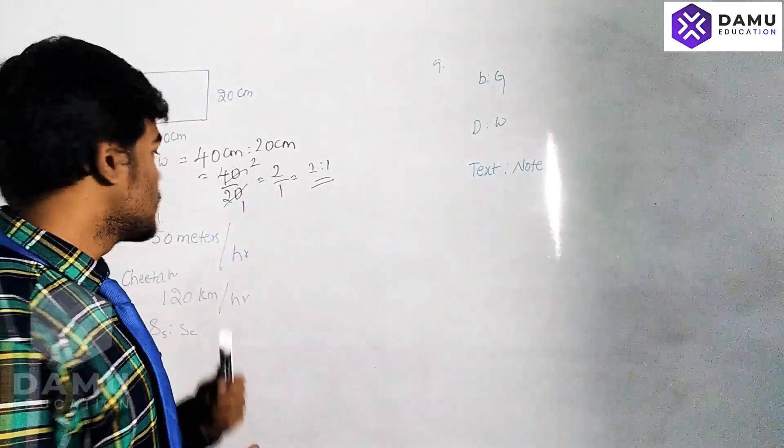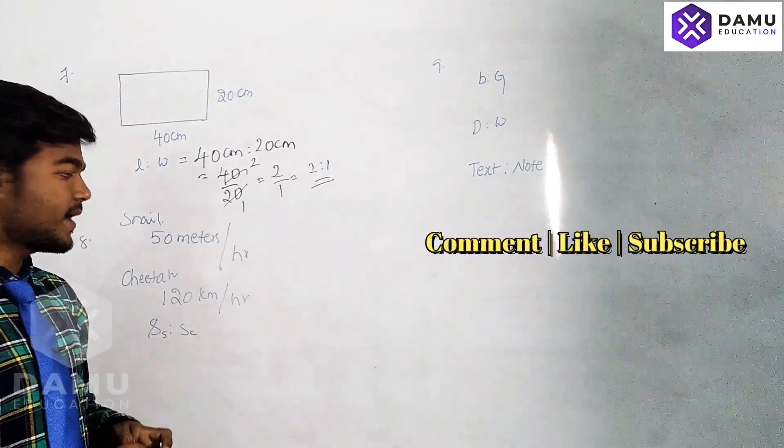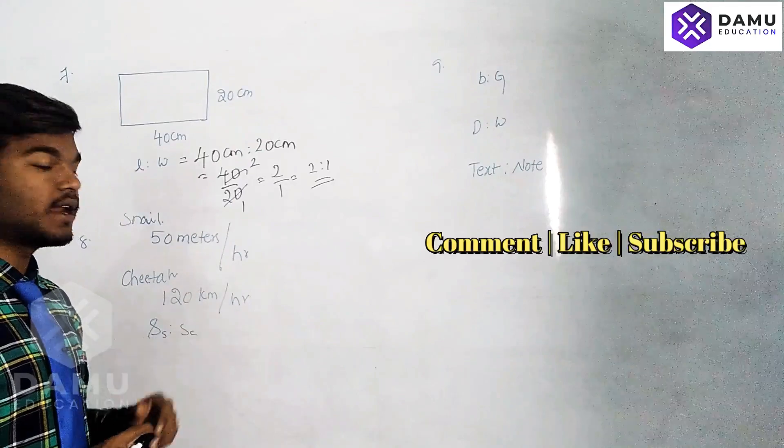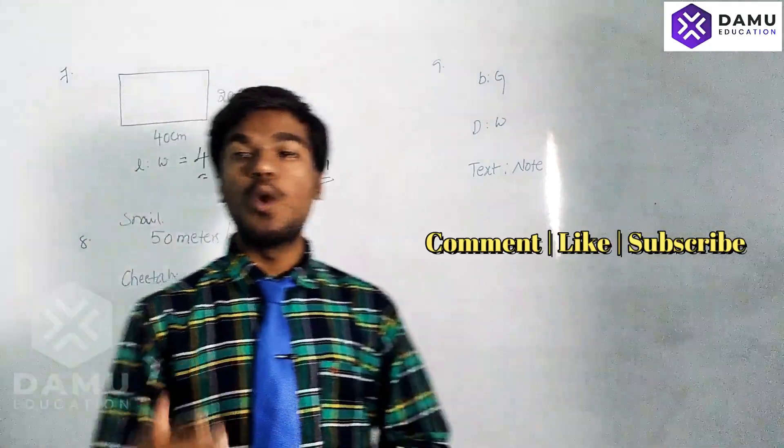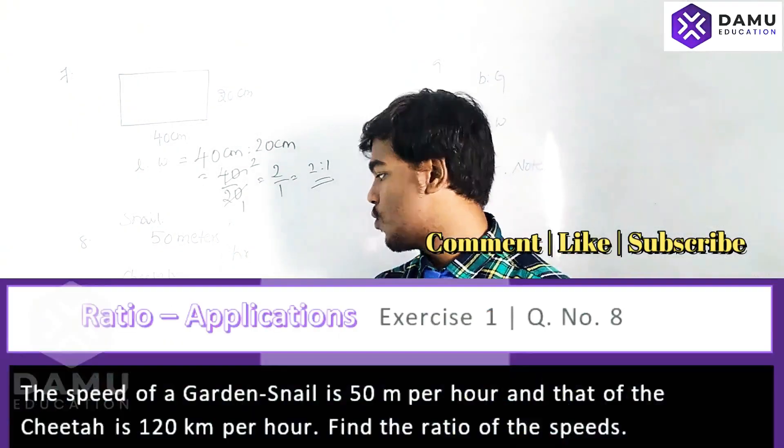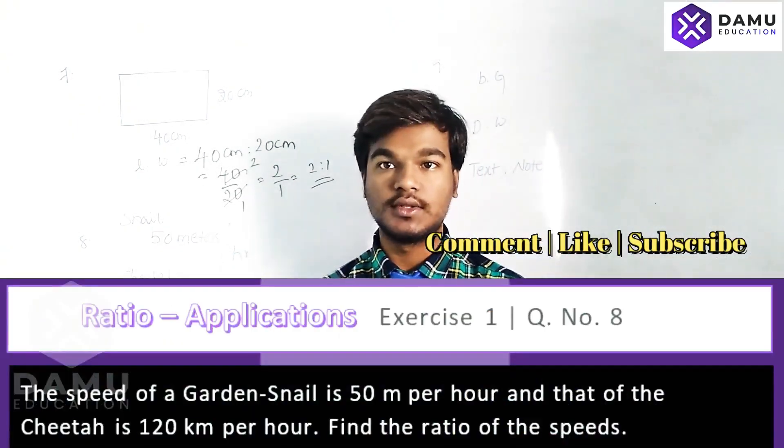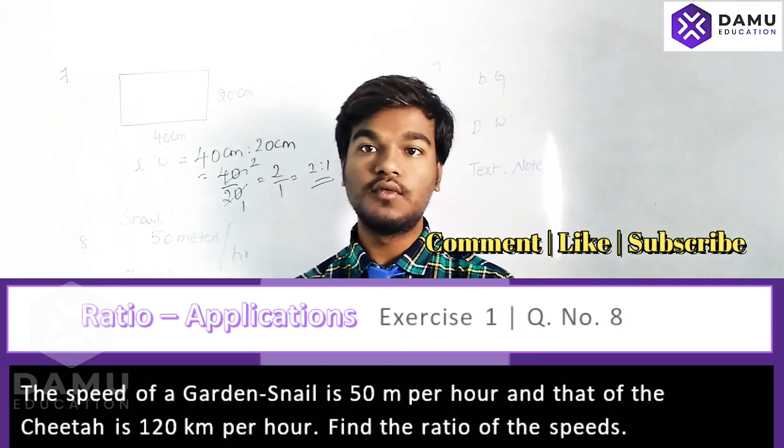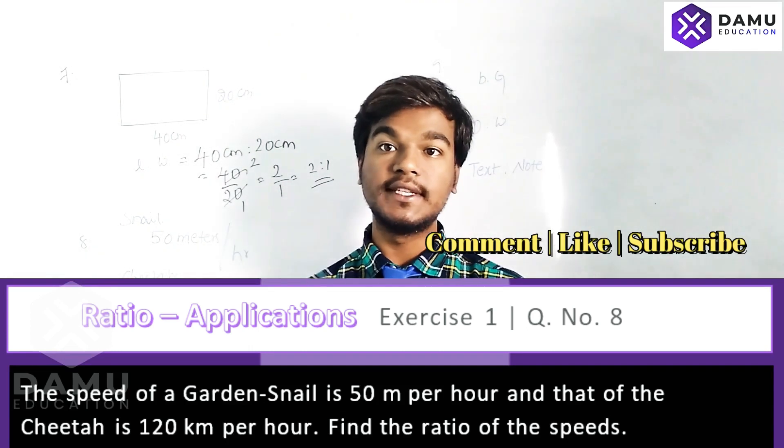One snail in the garden travels around 50 meters per hour, and a cheetah can travel 120 kilometers per hour. What is their ratio? Before solving this, we have to convert kilometers into meters.